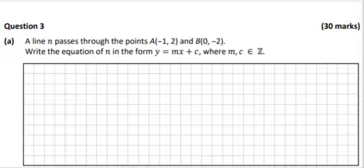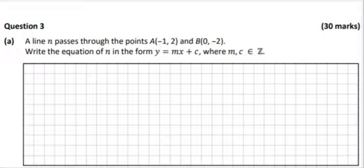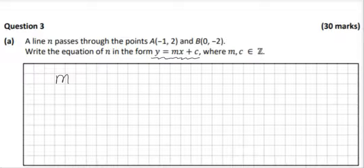Hello and welcome to Maths Plus. We're on the 2021 Leaving Cert Ordinary Level Paper 2, Question 3. A line passes through the two points A and B, and we need to get the equation in the form y equals mx plus c. The first step is to find m, which is our slope.